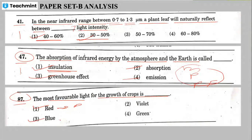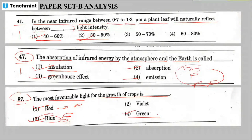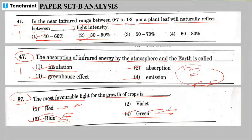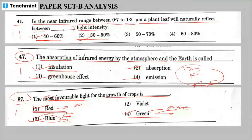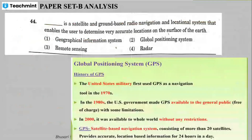Blue light suppresses some processes and increases leafy thickness as a result. Green light — most of the green light is reflected by the plant, so green light does not play a major role in plant architecture or photosynthesis. Therefore, red light is the most favorable for crop growth.